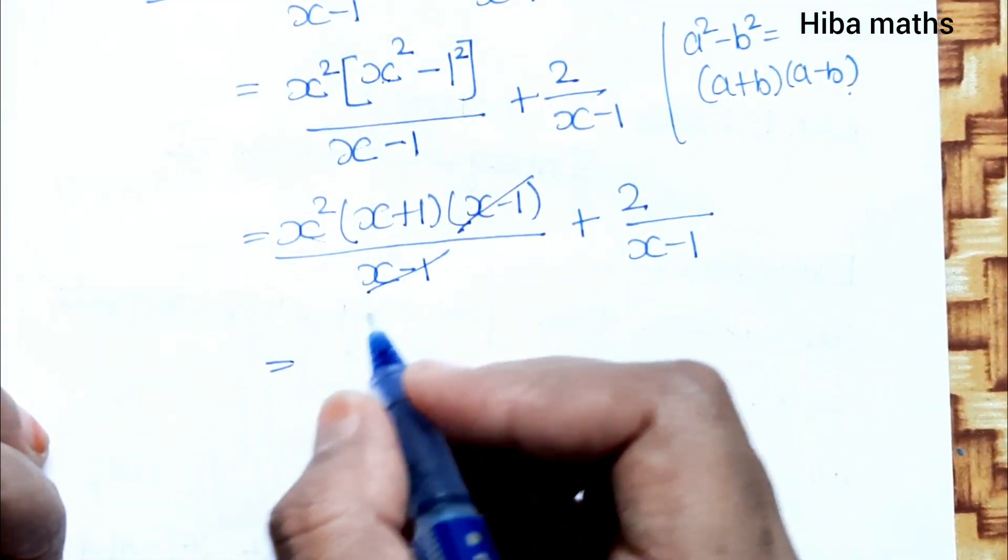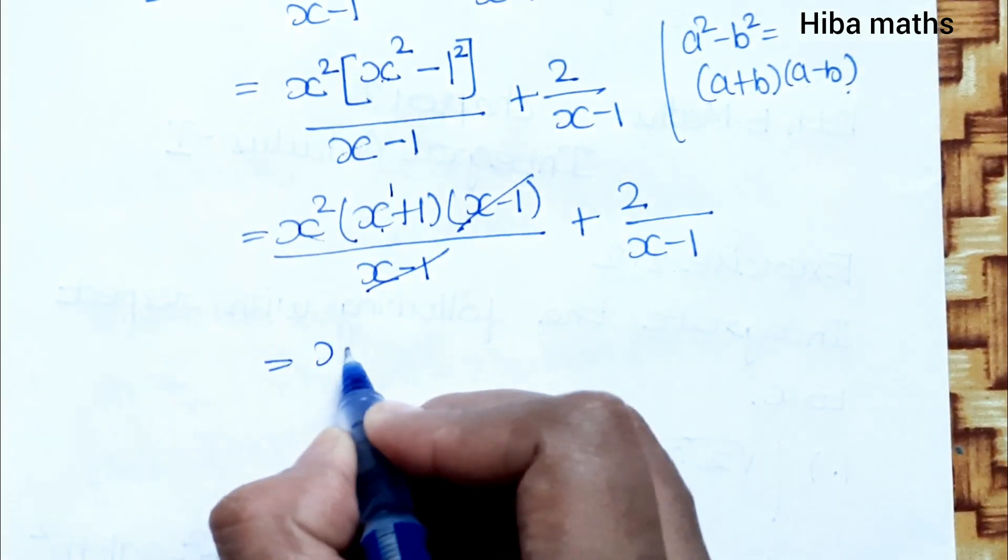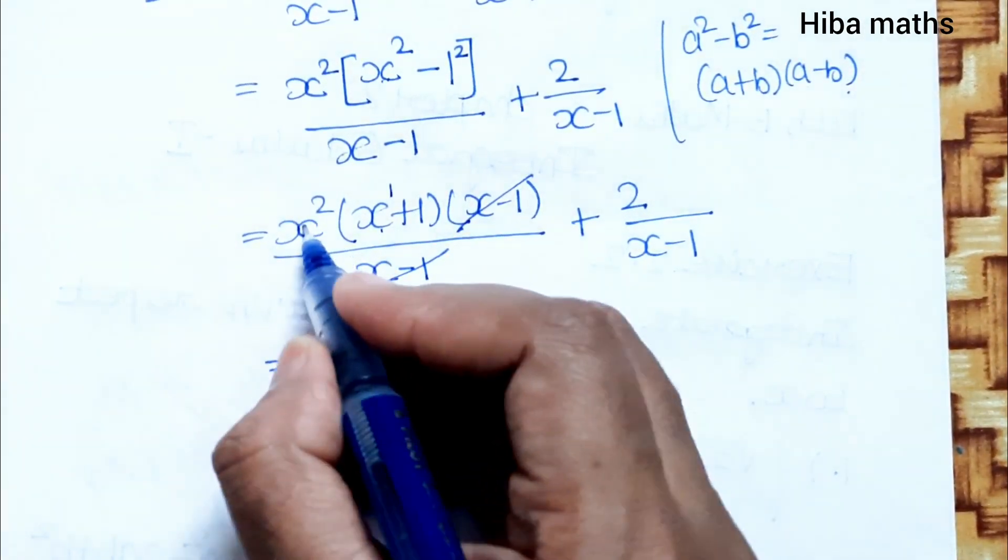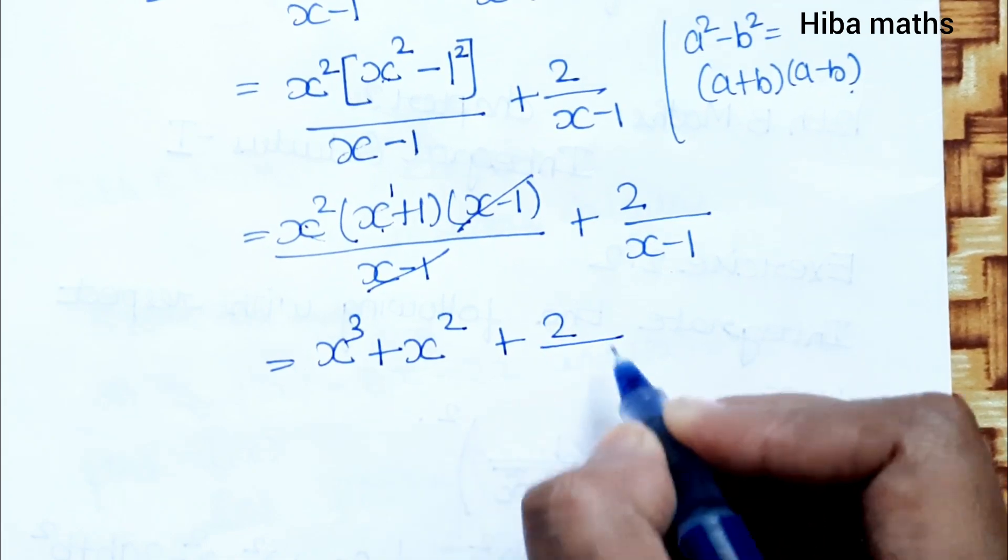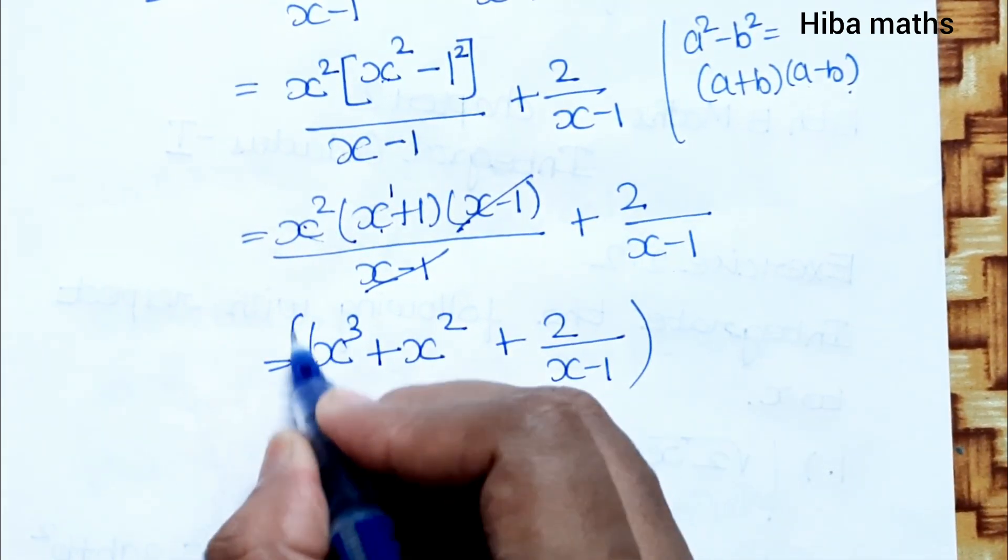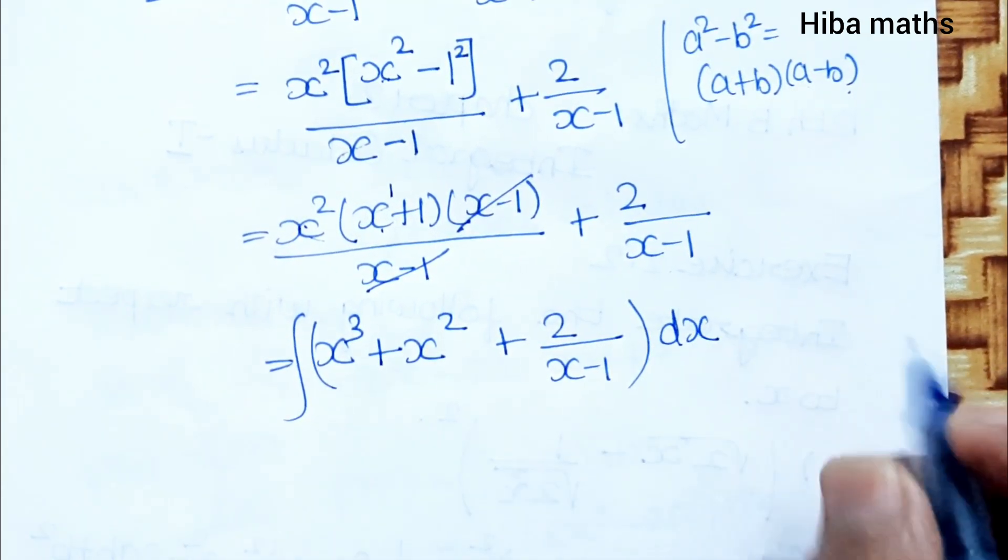After multiplying inside: x^2 times x gives x^3, plus x^2 times 1 gives x^2, plus 2/(x - 1). Now we're ready to integrate.